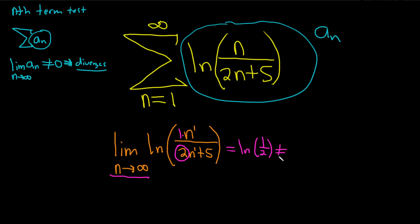That's not equal to zero, that's some negative number, I don't know what it is, but it's not zero, that's all that matters. So our series diverges by the nth term test.